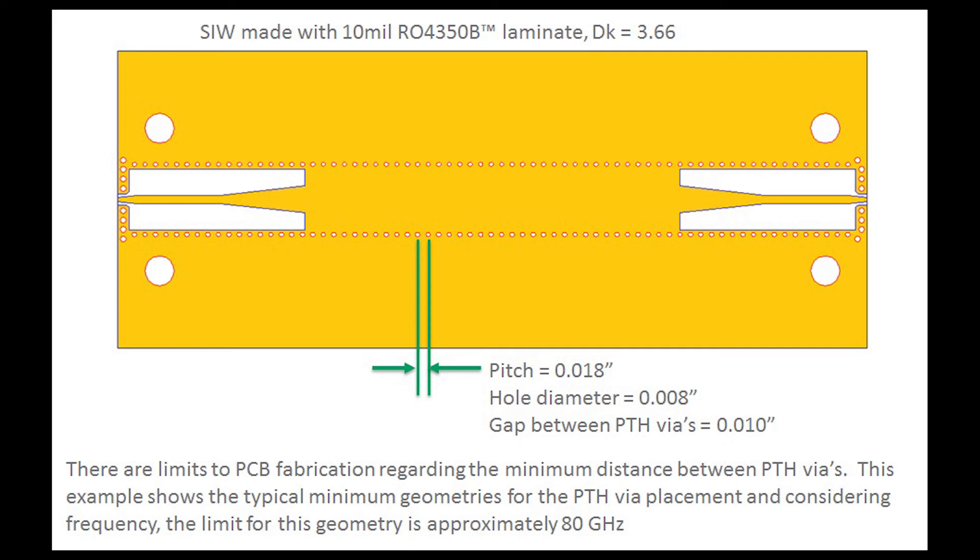Now what that allows you is, assuming the eighth wavelength rule of thumb, that allows the structure to operate pretty cleanly out to 80 gigahertz. Assuming you have a good transition from the microstrip to the SIW, the plated through holes will act as a good wall for the SIW out to about 80 gigahertz.